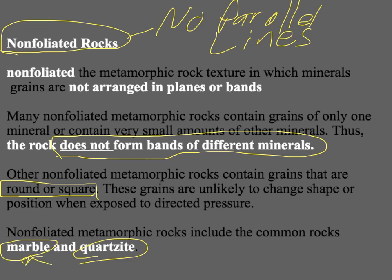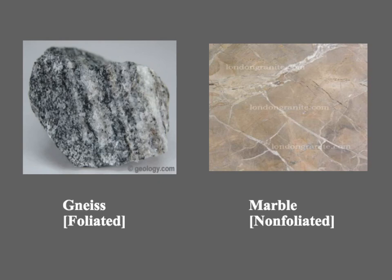To illustrate the difference between foliated and non-foliated: here is some gneiss, and you can see the alternating lines of dark and white — it looks almost like a zebra rock. And over here we have some marble. You can see different lines, which are just cracks in the marble. But looking at the underlying rock, you can see different areas of color that are not separated into nice parallel lines.